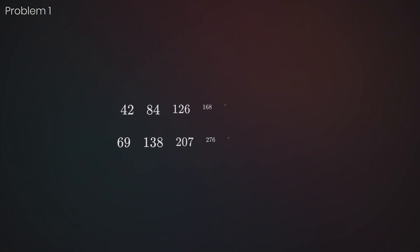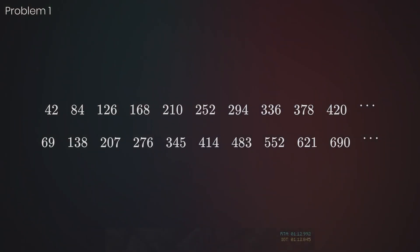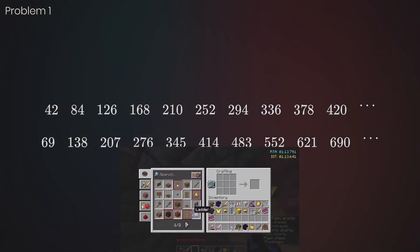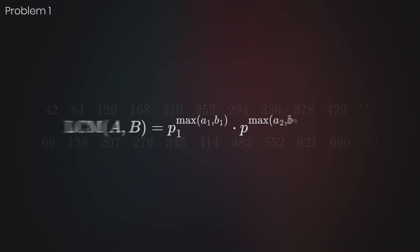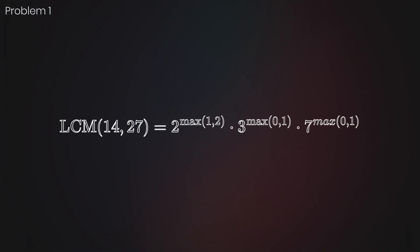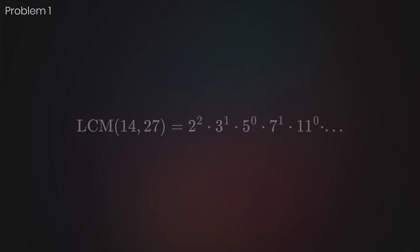Of course, you can write out the multiples of 42 and 69, but I can speedrun diamonds half a dozen times before you finish. The smart way is to factor our numbers into primes.